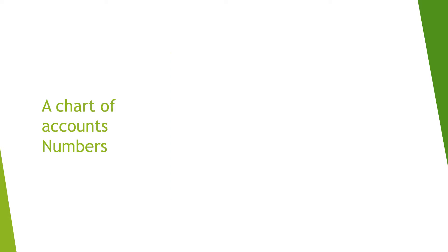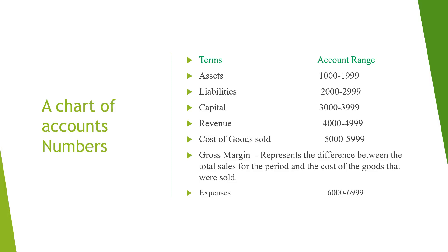These accounts have numbers. Asset account numbers range from 1,000 to 1,999. Liability account numbers range from 2,000 to 2,999.